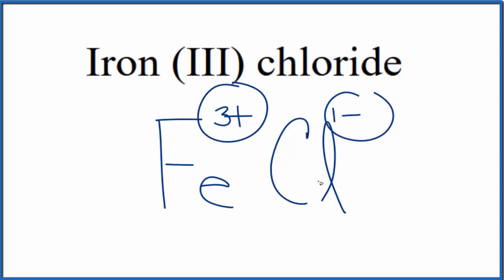We have a 3 plus and a 1 minus. So if we had 3 of these chloride ions here, 3 times 1 minus, that would give us 3 minus. That would balance out the 3 plus.